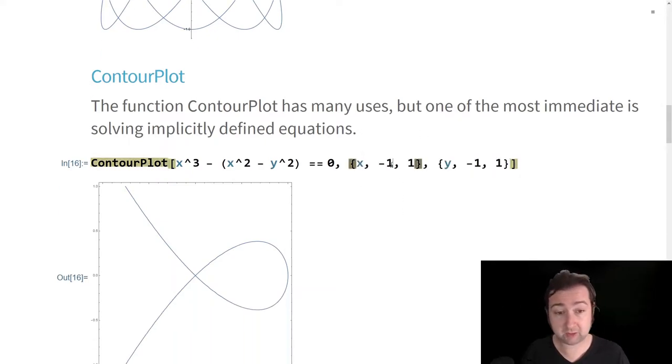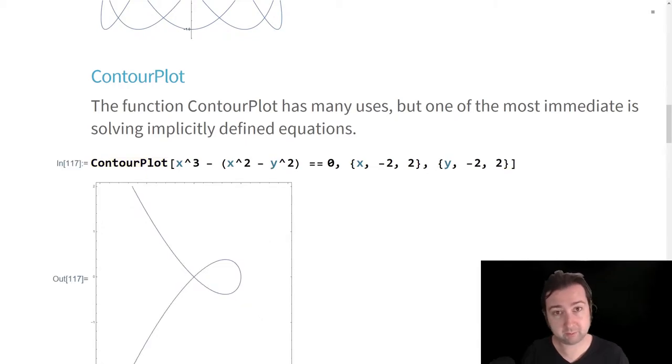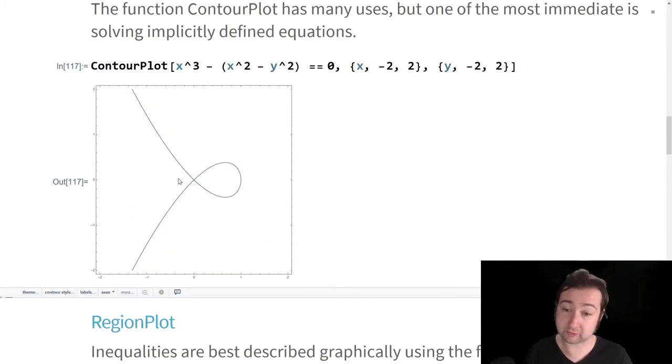I have to give it x and y values that I can plot this within. That can be varied. You can set this to be two to two. And of course, you're going to get a bigger picture. One thing that you might notice in this graph is that this curve is self intersecting. And you might wonder where that happens.